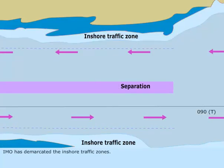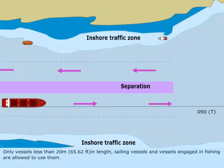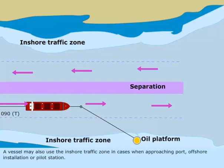IMO has demarcated the inshore traffic zones. These are not to be used by large vessels. Only vessels less than 20 meters or 65.62 feet in length, sailing vessels, and vessels engaged in fishing are allowed to use them. Ships may use the inshore traffic zone only in emergencies, or when approaching a port, offshore installation, or pilot station.